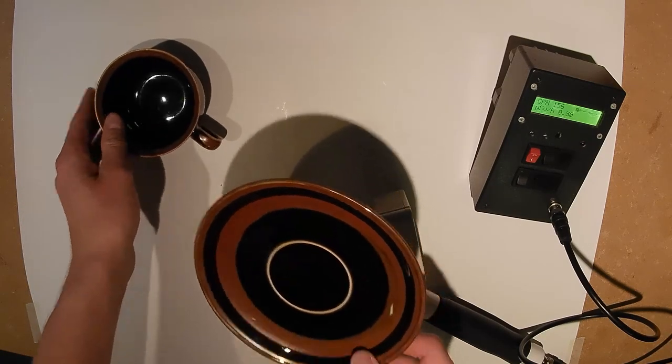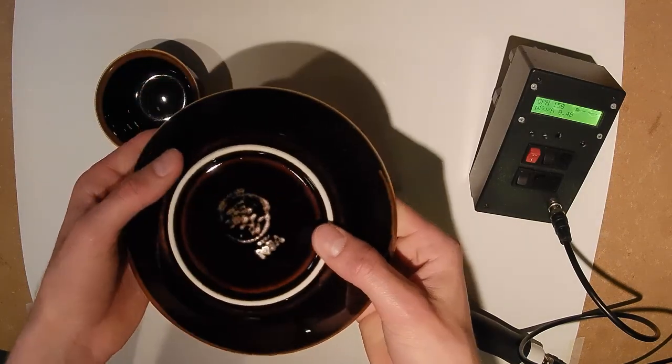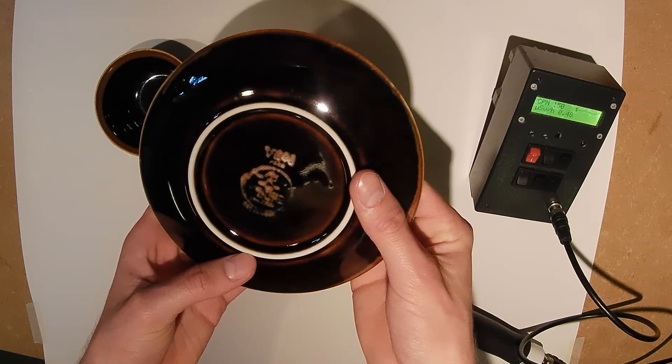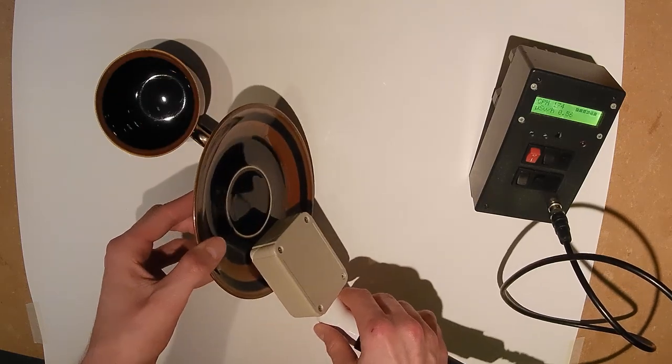Here is another interesting uranium glaze color. This cup and saucer from the Viking line were made by Rössstrand in Sweden. The brown glaze on this sample clocks in at about 2,500 counts per minute.